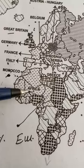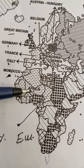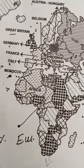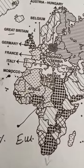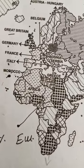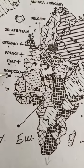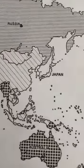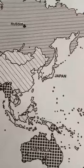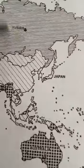Here you can see Africa, and next you can see Morocco. This Morocco is positioned in North Africa. And now you can see Russia here.